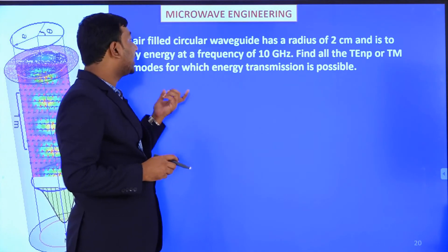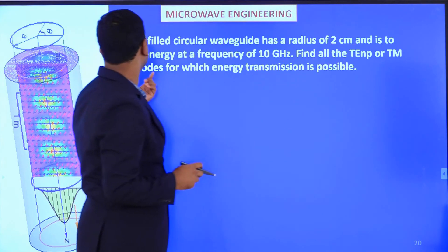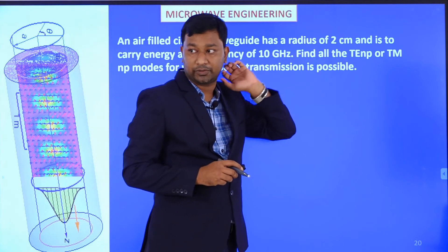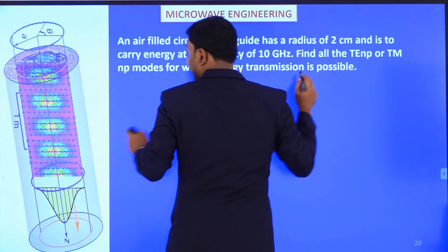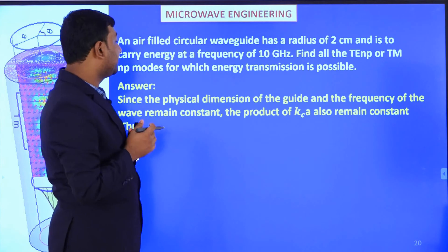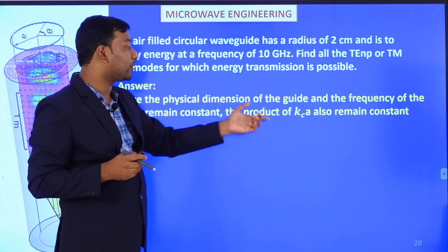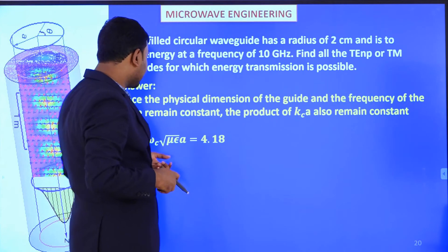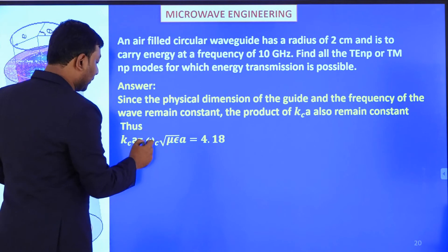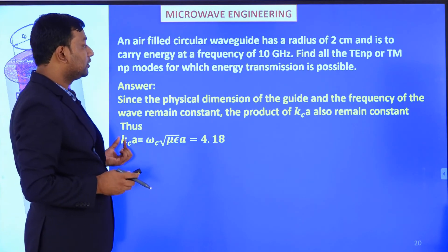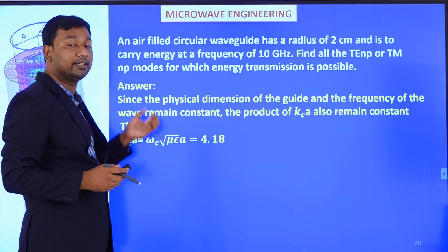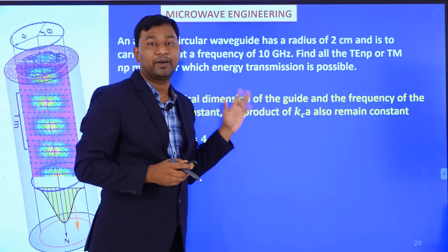Numerical problem: An air-filled circular waveguide has a radius of 2 centimeters and carries energy at a frequency of 10 gigahertz. Find all TE(np) and TM(np) modes for which energy transmission is possible. Given: A equal to 2 cm and f equal to 10 GHz. Since the physical dimensions and frequency remain constant, the product kc·a also remains constant. We calculate kc·a equal to (omega/c)·A, which evaluates to 4.1.